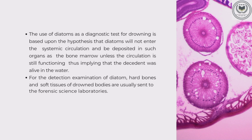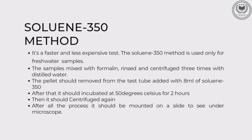For detection, the examination method used is the Solution 350 method. It is a faster and less expensive test used only for fresh water samples. The sample is mixed with formalin and centrifuged three times with distilled water. The pellet is removed from the test tube and 8 ml of Solution 350 is added. It is then incubated at 50 degrees Celsius for two hours, centrifuged again, and finally mounted on a slide to observe diatoms under the microscope.